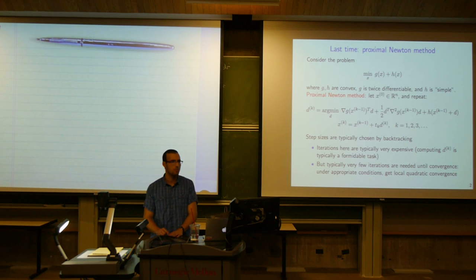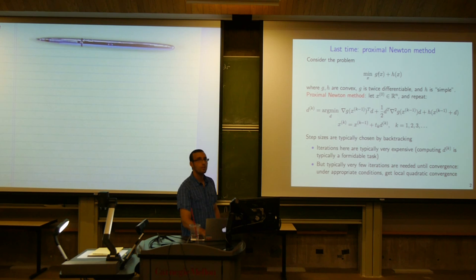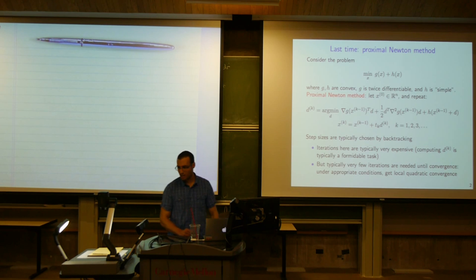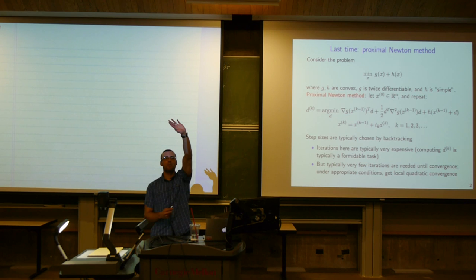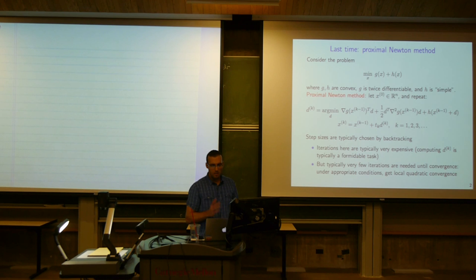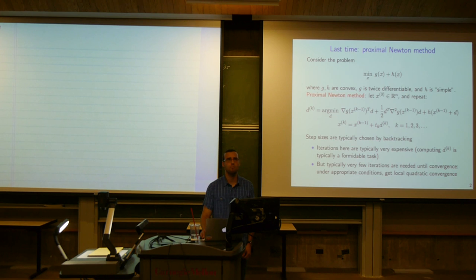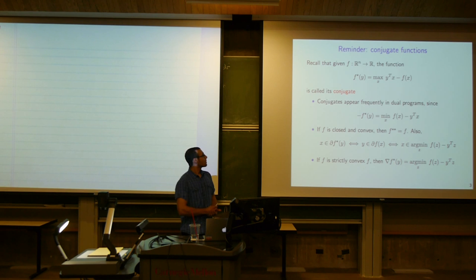Last time I went over PrelimNet, a particular implementation of proximal Newton for the case when G is a negative log-likelihood from an exponential family and H is a separable penalty. I went over it quickly and my handwriting was almost unreadable, so I'll revisit it if there's time, or you can stop by office hours or check the relevant literature.